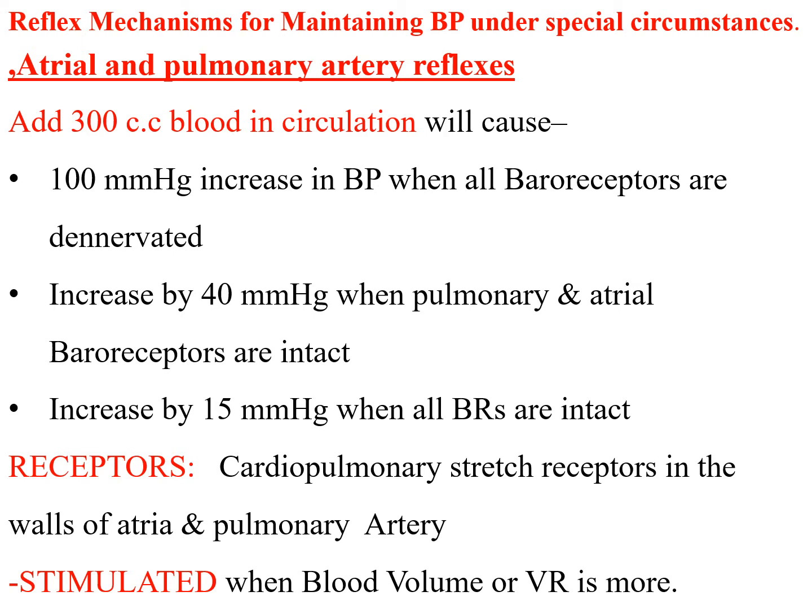If the pulmonary and atrial baroreceptors are kept intact, blood pressure will only increase by 40 mmHg on adding 300 cc of blood. This means a 60 mmHg advantage is provided by the pulmonary and atrial baroreceptors. If all baroreceptors are intact, adding 300 cc of blood will increase blood pressure by only 15 mmHg.